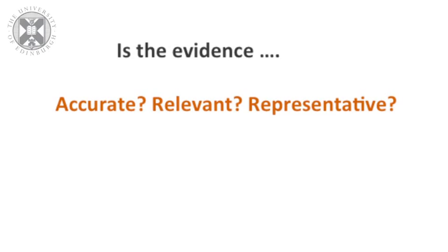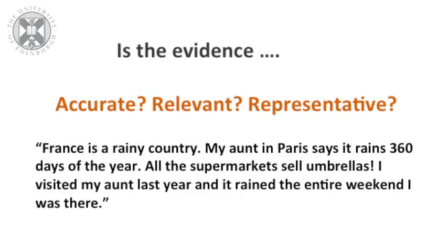Let's look at a sample argument supported by sample evidence. The argument is: France is a rainy country. Evidence given: my aunt in Paris says it rains 360 days of the year; all supermarkets sell umbrellas; I visited my aunt last year and it rained the entire weekend I was there. Taking these in steps: the first piece of evidence is inaccurate — it almost certainly doesn't rain 360 days per year; accurate records show the average is about 100 days per year in France. The second piece — all supermarkets sell umbrellas — is irrelevant, as supermarkets sell umbrellas regardless of how rainy it is. And finally, the fact that it rained in one city for two days is not representative of the whole country during a full year.